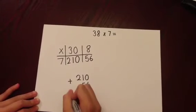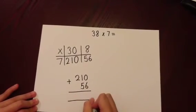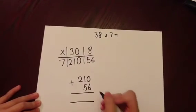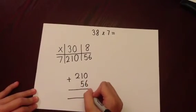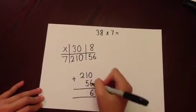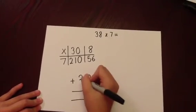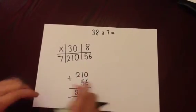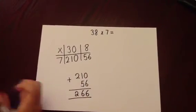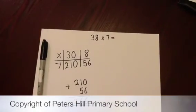Keeping the numbers in the correct column, zero add six is six, one ten add five tens is six tens, and two hundreds add zero is two hundreds. The answer to thirty-eight multiplied by seven is two hundred and sixty-six.